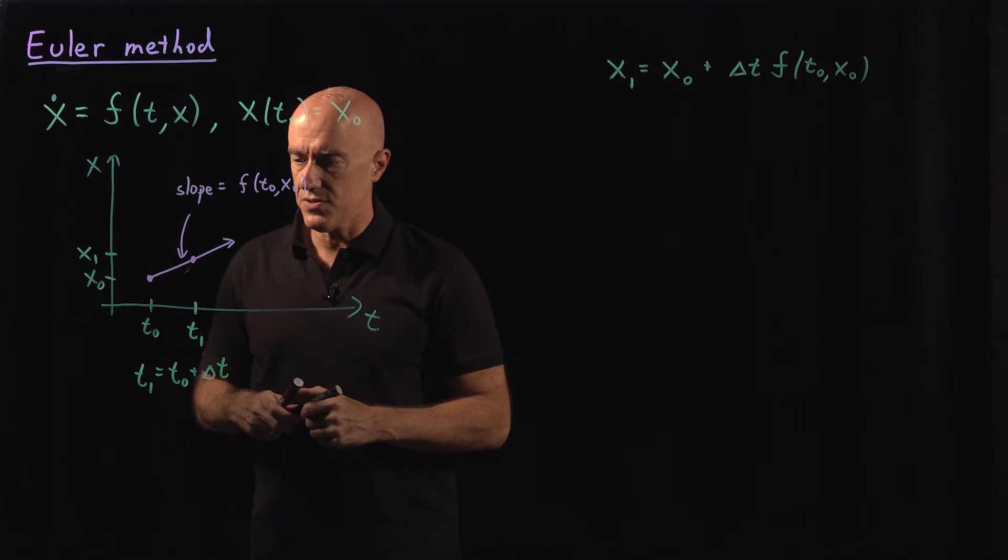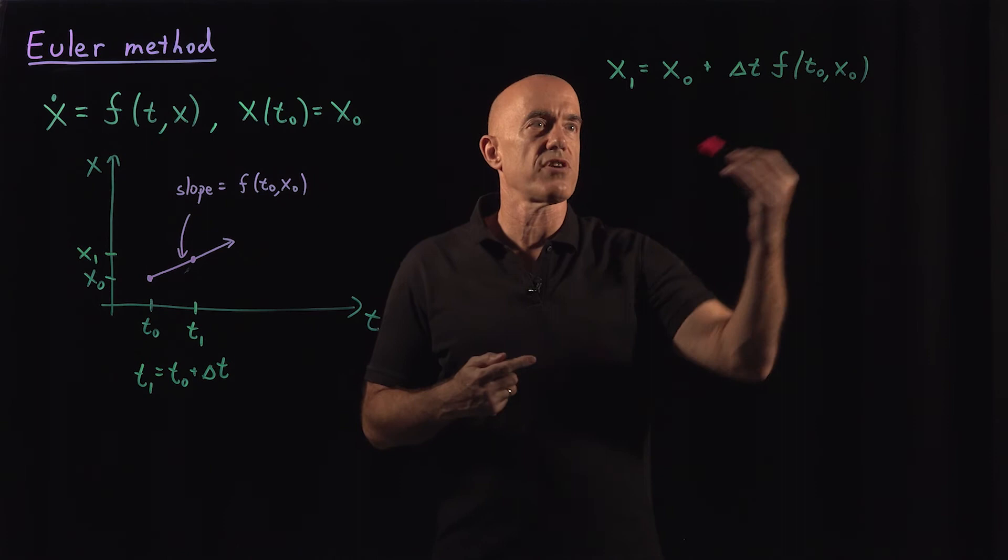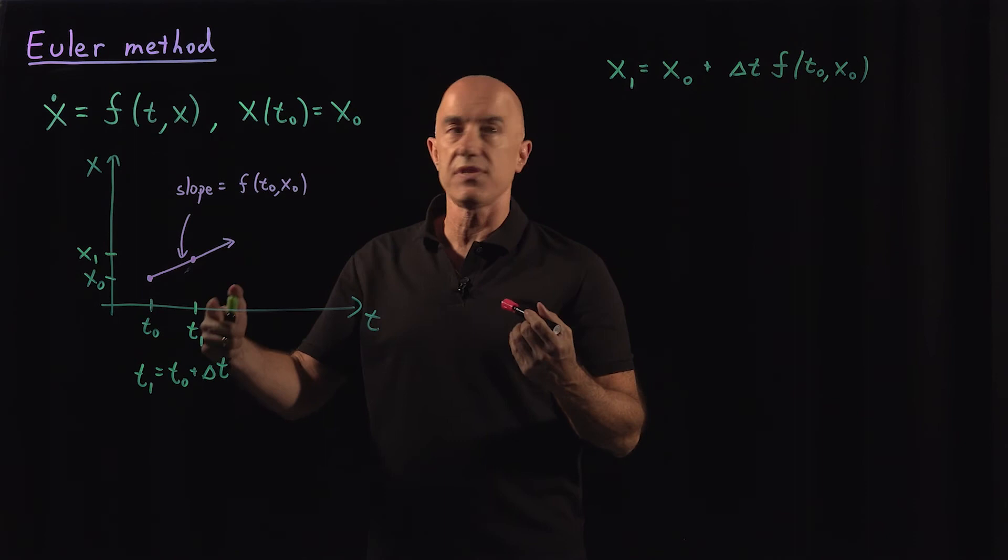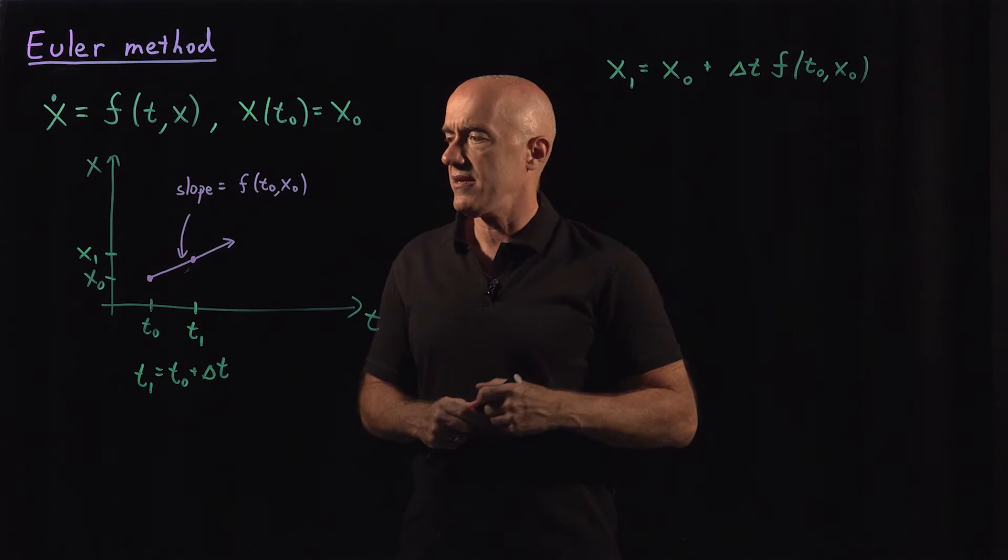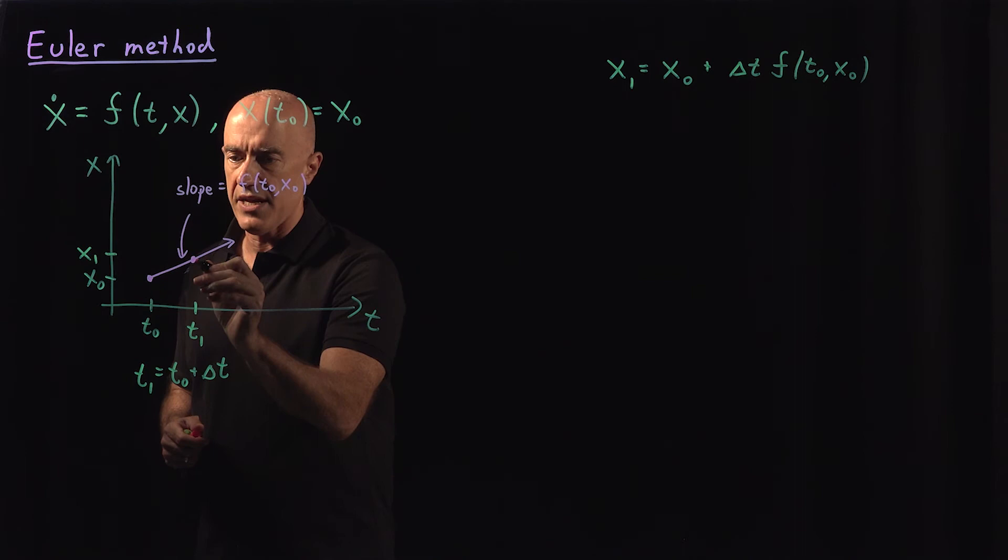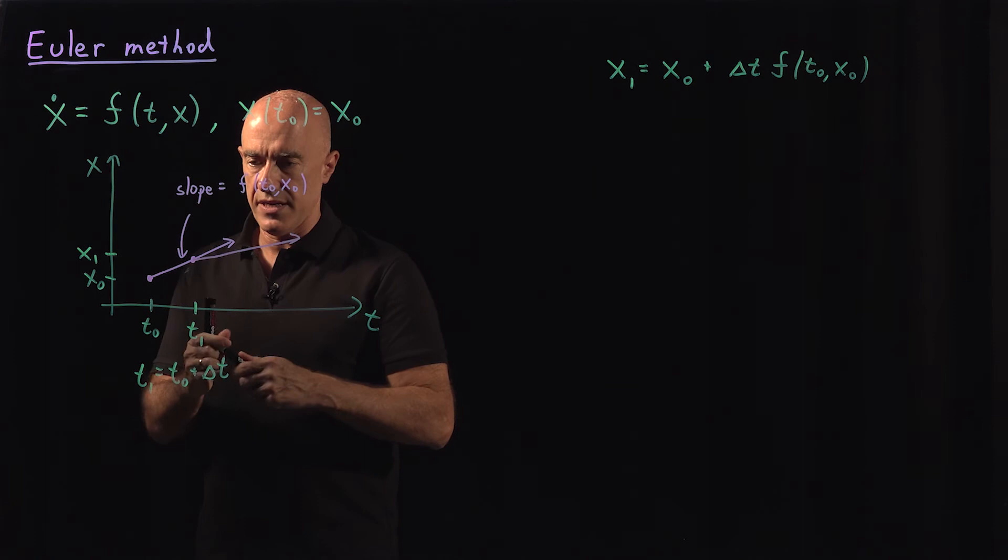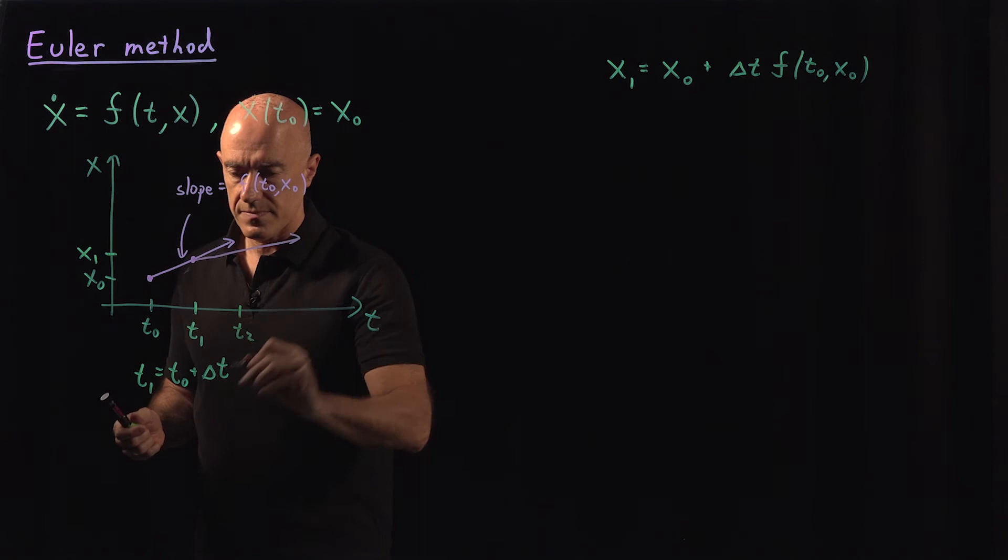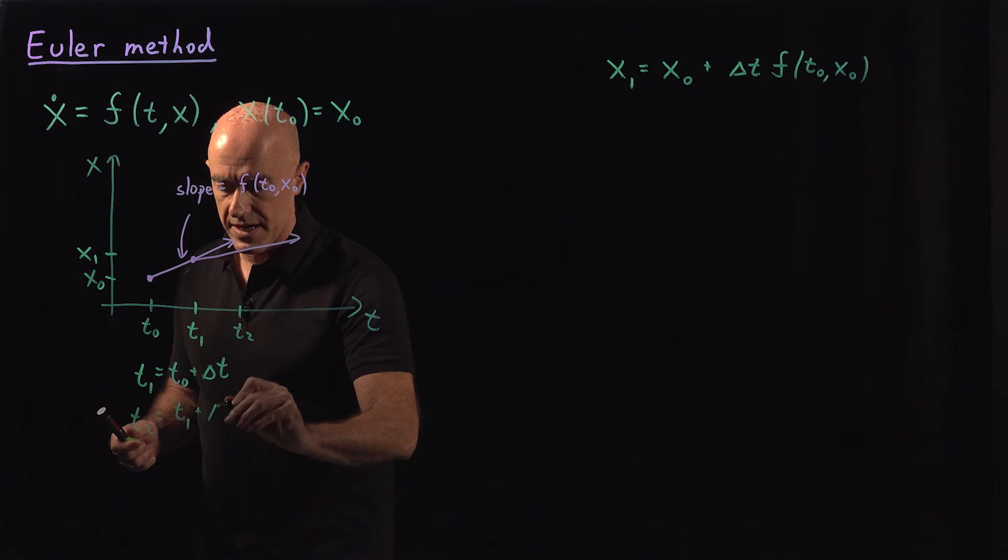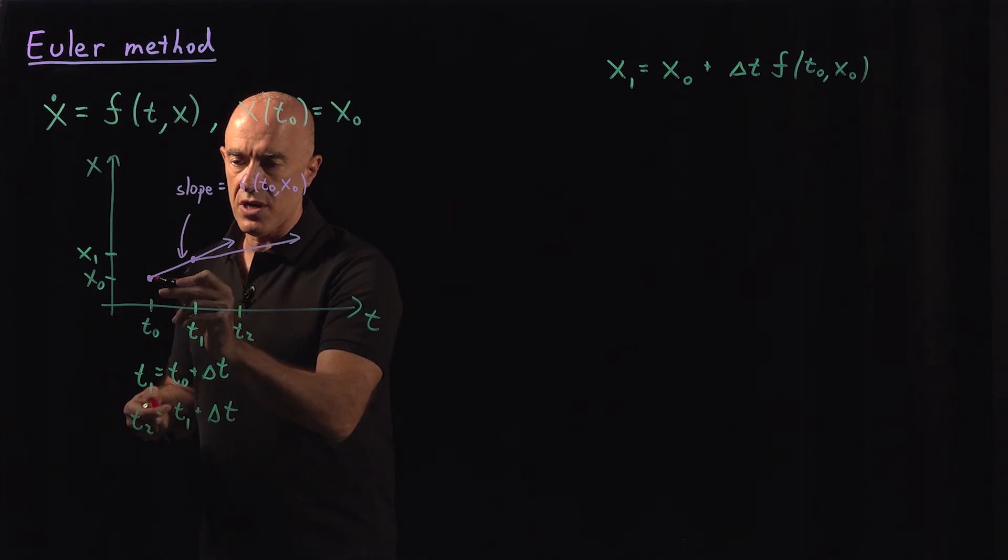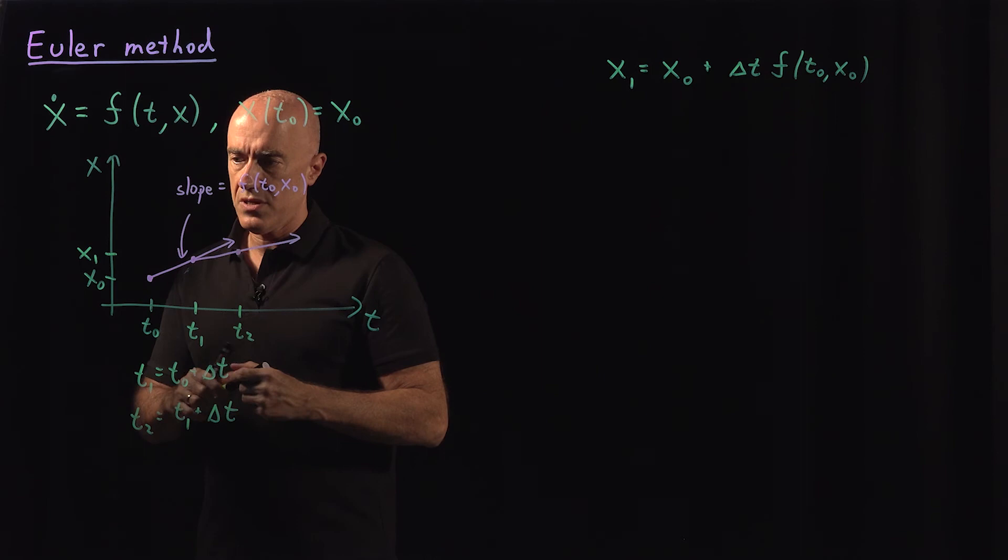And then we go to the next value. So here we have basically we start all over again. So we have a new initial condition. We have x of t1 equals x1, and we repeat the marching. So now we calculate the slope of the tangent line here. Let's say x dot is slightly decreasing, and we draw a slope that looks like this. Then we march forward along the tangent line to a time t2. t2 is t1 plus delta t.